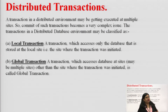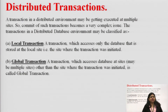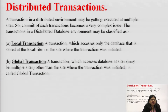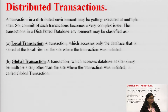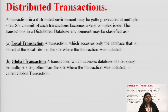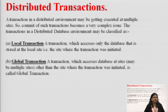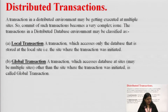When we talk about a transaction, it can be classified into two categories: local transaction and global transaction. A local transaction accesses only the database stored on the local site — that is, the site where the transaction has been initiated. A global transaction is when a transaction tries to access a database at a site different from where it got initiated — possibly at one particular site or multiple sites.